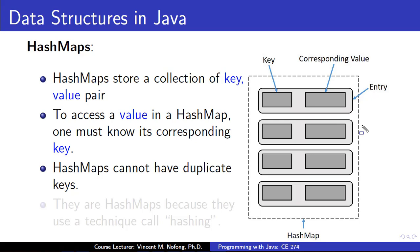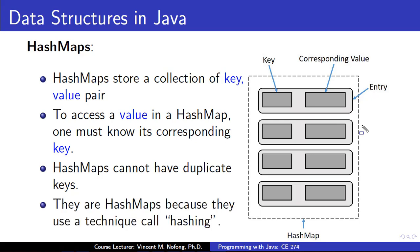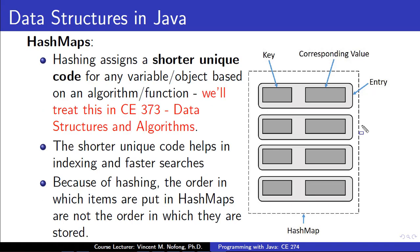They are called HashMaps because they use a technique called hashing. Hashing is basically a technique for assigning shorter unique codes to variables or objects using what is known as a hashing function or algorithm — this will be treated in detail in Data Structures and Algorithms. The shorter unique codes created using the hashing function help in indexing and faster searching. Because of the hashing, the order in which we put items into the HashMap is not necessarily the same order in which they are stored.